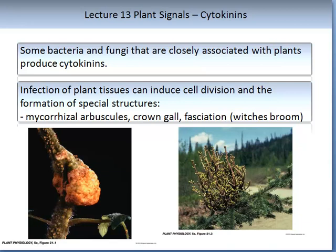Some bacteria and fungi closely associated with plants produce cytokinin. Infection of plant tissues can induce cell division and the formation of special structures. For example, infection by the microbe Agrobacterium or crown gall causes fasciation — an abnormality in which a cell enlarges into a flat ribbon-like shape resembling several stems fused together. This infection also occurs in witch's broom.